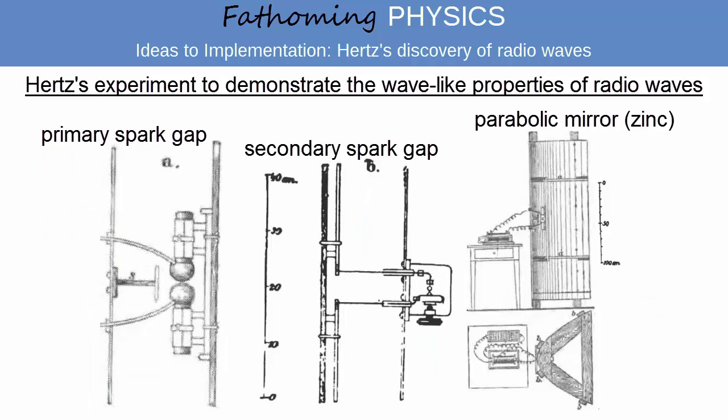For this experiment he modified his equipment somewhat. He increased the frequency of the oscillations by a factor of 10, so that the wavelength of the radio waves was about 30 centimetres, and was small enough that he could construct parabolic mirrors to reflect the waves, and so generate parallel beams.